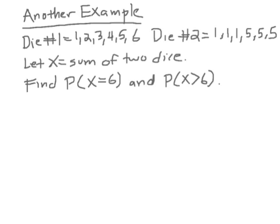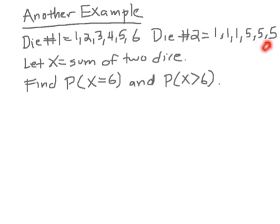Here's another discrete random variable example with two dice. The first die is a regular die with faces 1 through 6. The second die is unusual — three of the faces have a 1 and three of the faces have a 5. X is the sum of the two dice. We want to find the probability that X equals 6, and the probability that X is greater than 6. What's different about this question is we have to make the table ourselves.